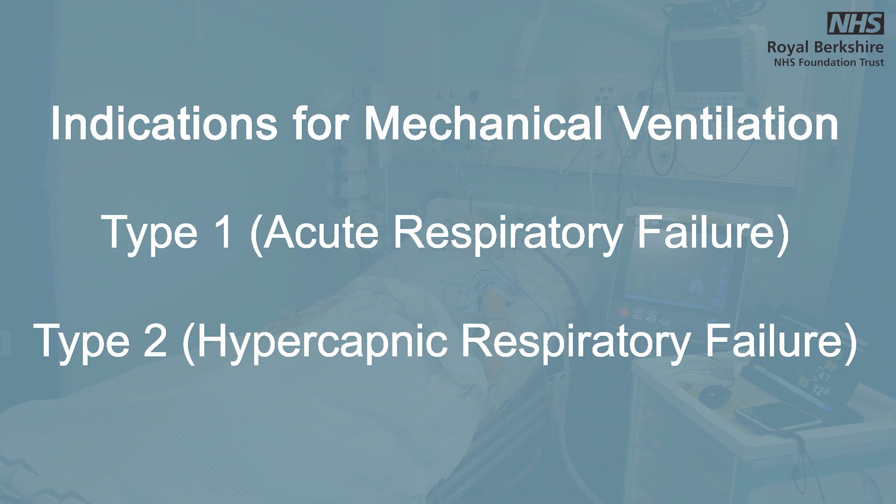What are the indications for mechanical ventilation? To make an appropriate therapeutic decision, we need to differentiate what type of respiratory failure the patient has. This is classed into Type 1, or acute respiratory failure, and Type 2 respiratory failure, or hypercapnic respiratory failure. Some patients will have a mixture of both.